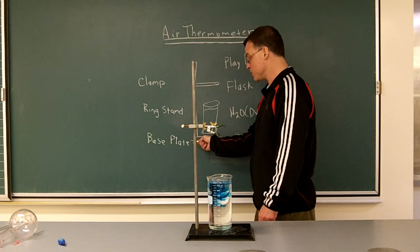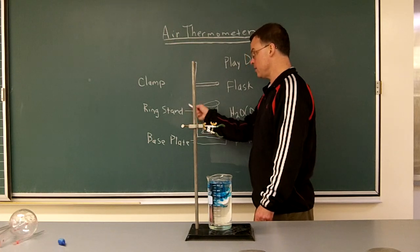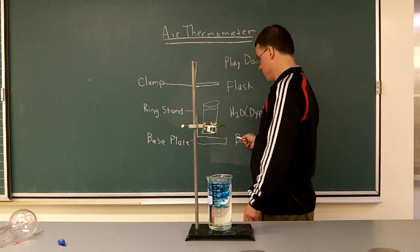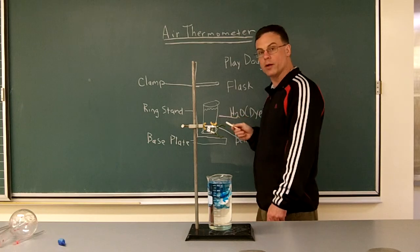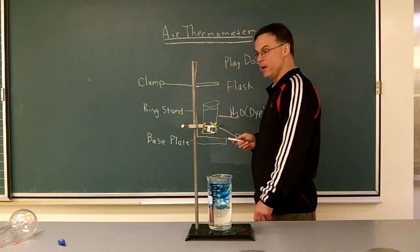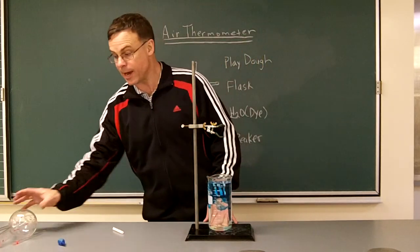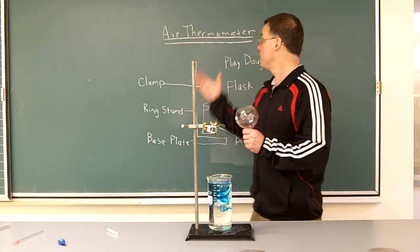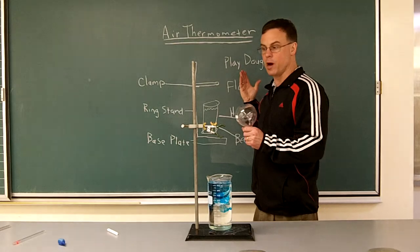So, so far we have the base plate, the ring stand, a clamp, a beaker filled with water that's been colored with dye. The next element that we need to add is a flask. This will be the container for the air for our air thermometer.